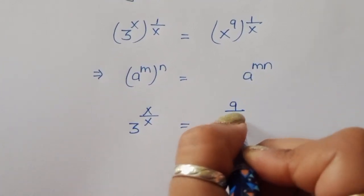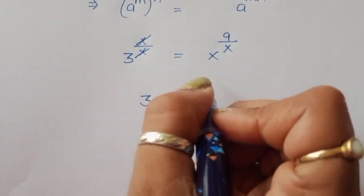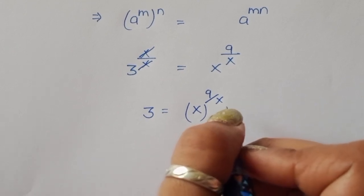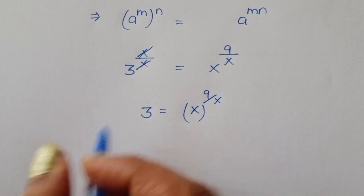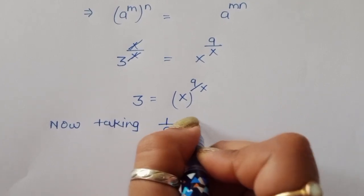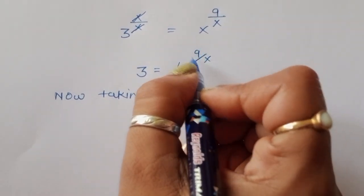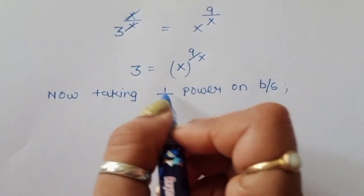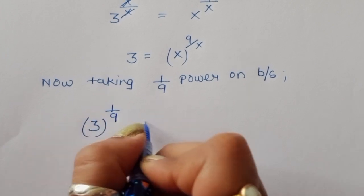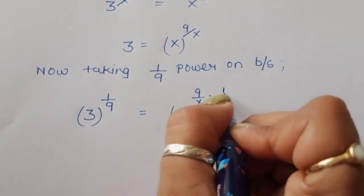Using this formula, we can write 3 power x upon x is equal to x power 9 upon x. Now x upon x cancels, so we get 3 is equal to x power 9 upon x. Now we take the 1 upon 9 power on both sides, because we want to cancel that 9.